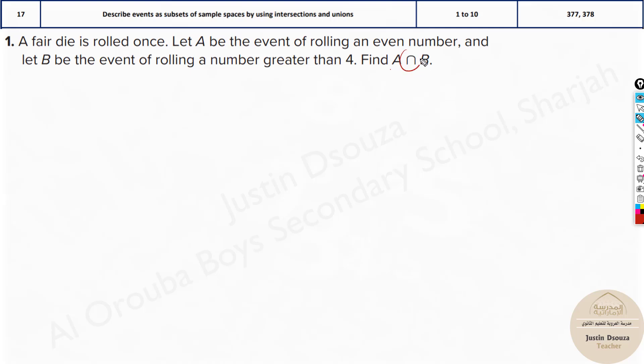This symbol, intersection, means the sample space must be there in both events A and B. Only such terms will be considered. If you write all the terms together that would be union. Now let's try solving this one. First what is A? A is rolling even number. It is 2, 4 and 6. You can write this as even numbers.